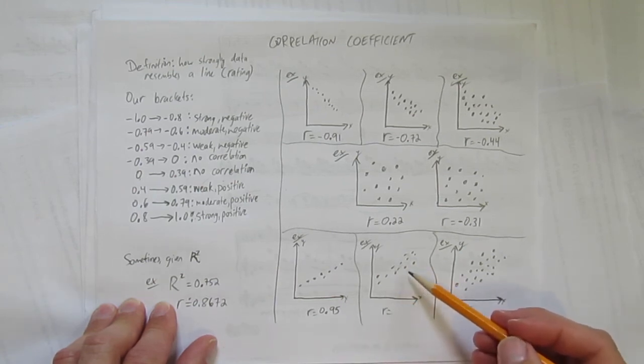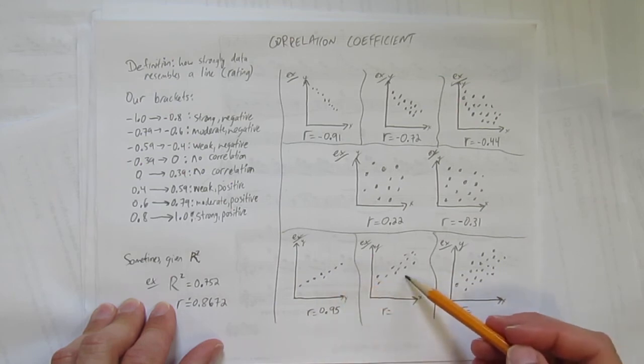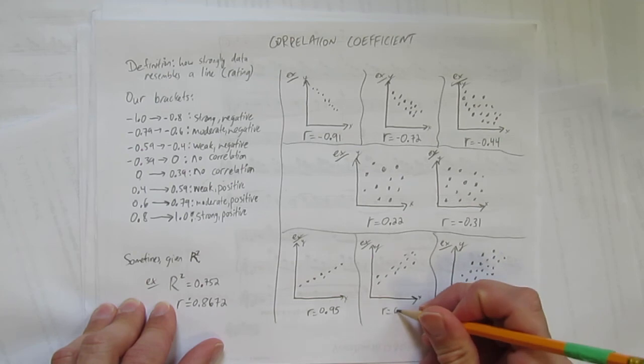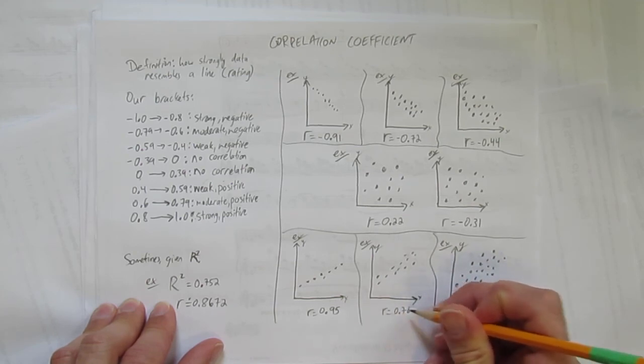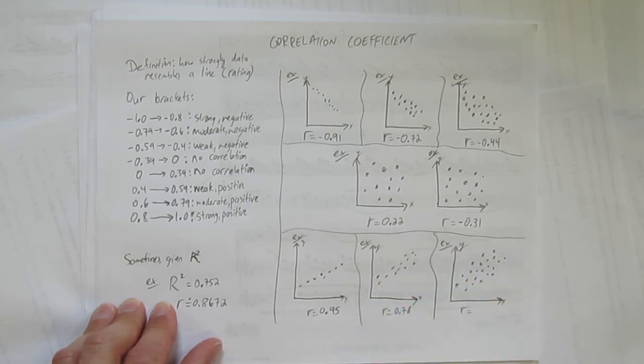Which this graph isn't. It's like a line but not as strong as this one. I would say moderate positive. So moderate positive I'm going to give it a point seven six. Still good, very good even, but not quite as strong as the other ones.